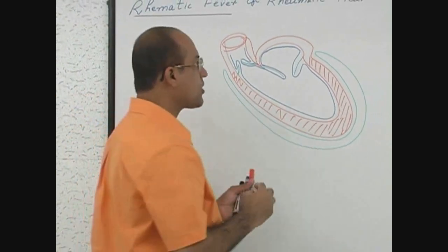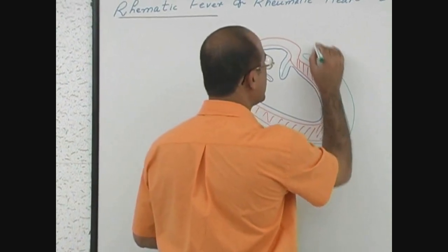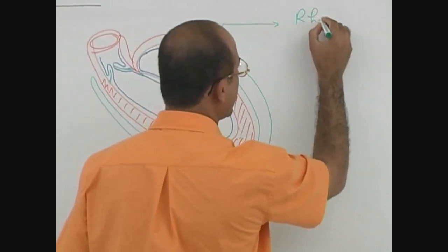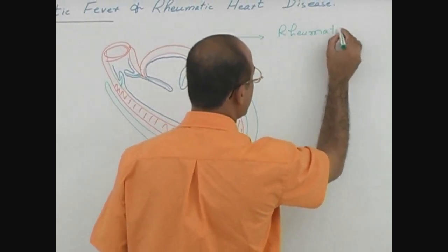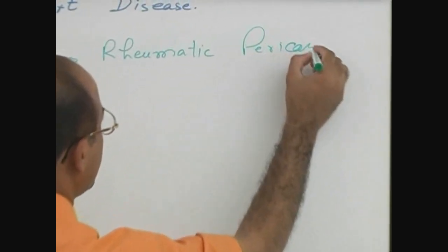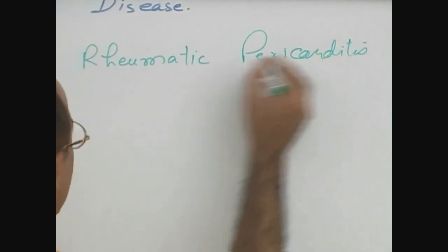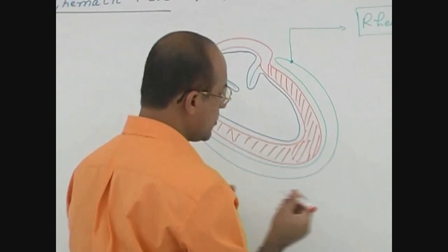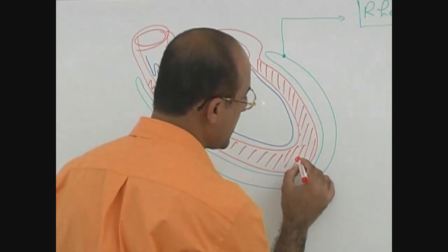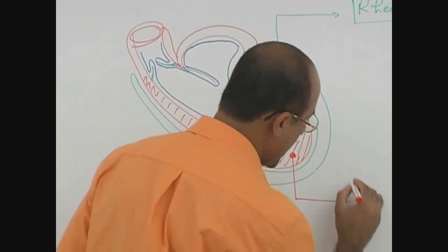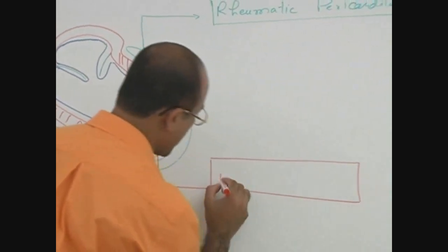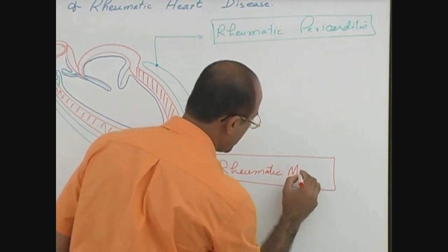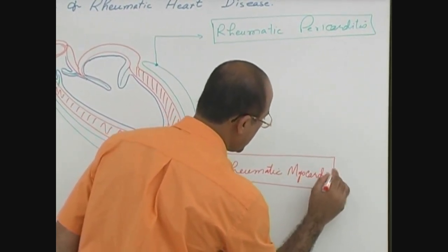If rheumatic process involves pericardium and this pericardial inflammation, we call it rheumatic pericarditis. If rheumatic process involves the myocardium, then we call this condition as rheumatic myocarditis.